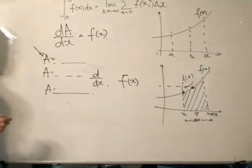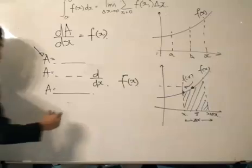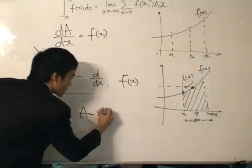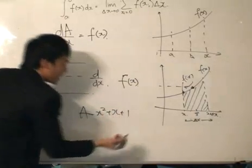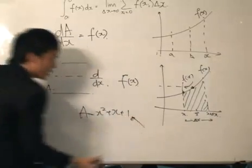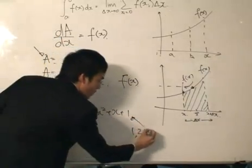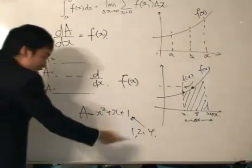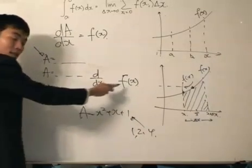A is only one of the anti-derivatives of function f(x). Because as you know, if A equals x squared plus x plus 1, let's just say, it can be 1, it can be 2, it can be 4. And when we differentiate that, we will get the same function, function f(x).